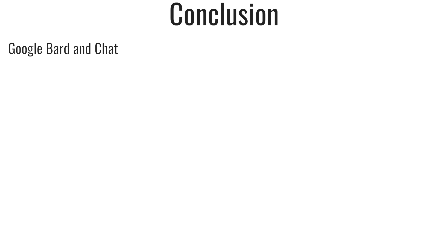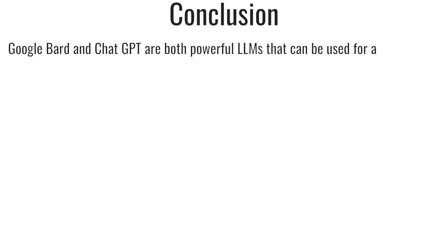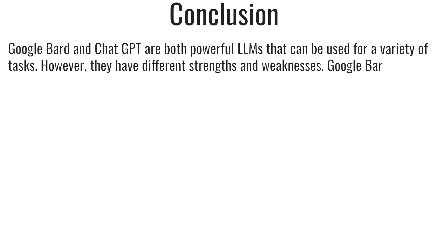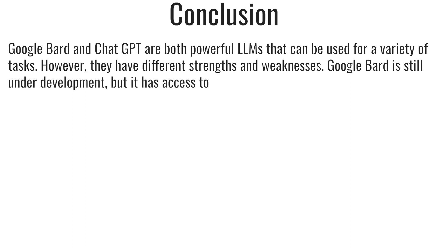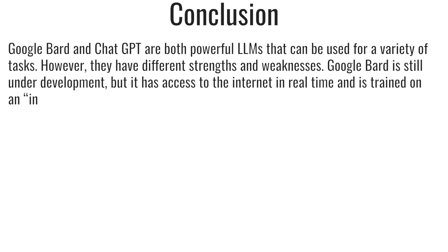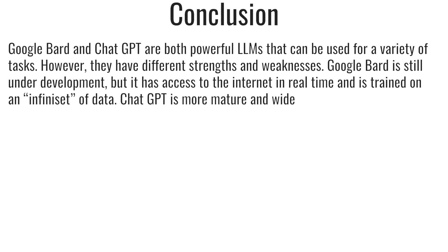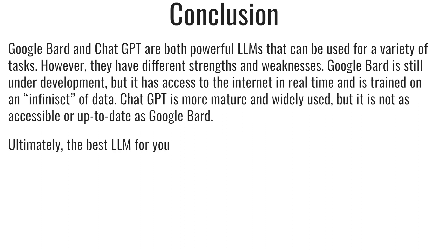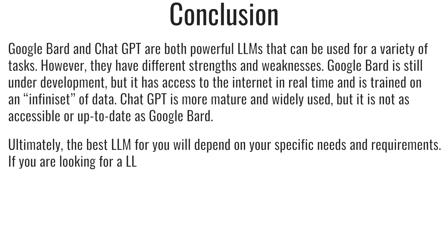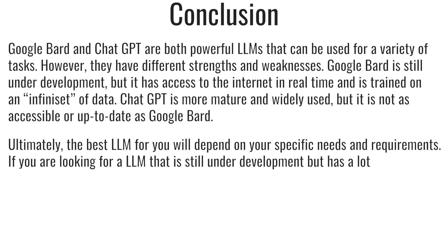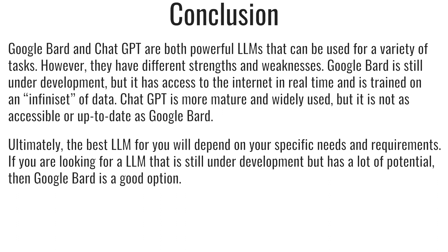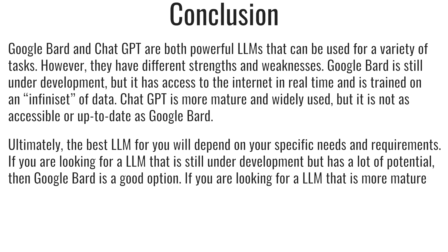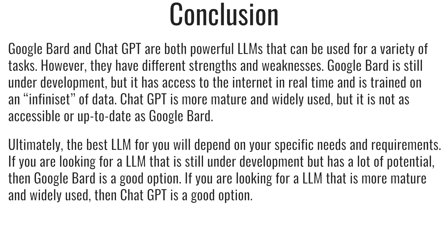Conclusion. Google Bard and ChatGPT are both powerful large language models that can be used for a variety of tasks. However, they have different strengths and weaknesses. Google Bard is still under development but has access to the internet in real time and is trained on a large dataset. ChatGPT is more mature and widely used, but it is not as accessible or up-to-date as Google Bard. Ultimately, the best model for you will depend on your specific needs. If you want a model with a lot of potential, Google Bard is a good option. If you want a more mature and widely used model, ChatGPT is a good option.